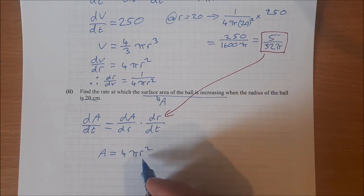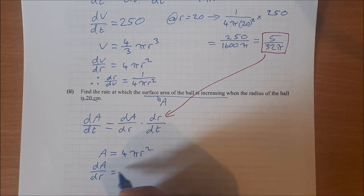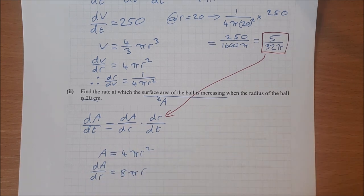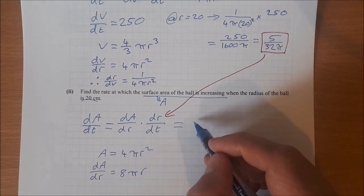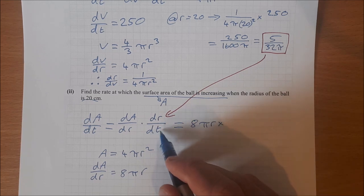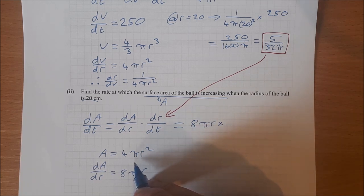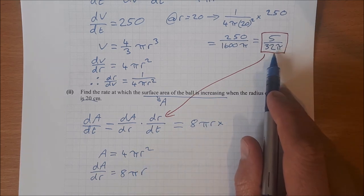Well, I use the area formula. The area of a ball is 4 pi r squared. So dA/dr is equal to 8 pi r. Then I can fill this in: dA/dr is 8 pi r.